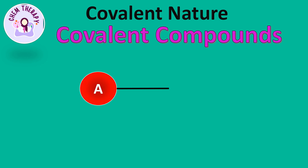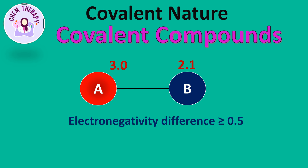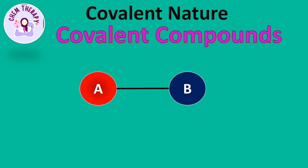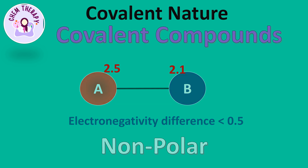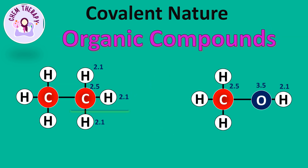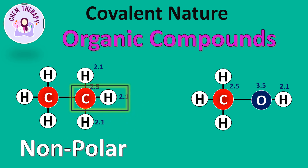If the difference of electronegativity between the bonded atoms is greater than or equal to 0.5, the compound is considered polar covalent. And if the difference of electronegativity is less than 0.5, the compound is considered non-polar covalent. The bond between carbon and hydrogen is an example of non-polar covalent, and the bond between oxygen and hydrogen is an example of polar covalent.